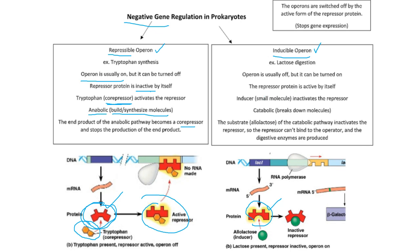Inducible operons also have a repressor, but the repressor is usually active. So the operon is usually off because this repressor is active — it's typically bonded right here to the operator. Now, if you have allylactose present, allylactose acts as an inducer, not as a co-repressor. This inducer is a small molecule — in this case, the molecule that the enzymes are going to break down: lactose. So it's a small molecule that inactivates the repressor. The inducer bonds to it and makes the repressor inactive, which pulls the repressor off.